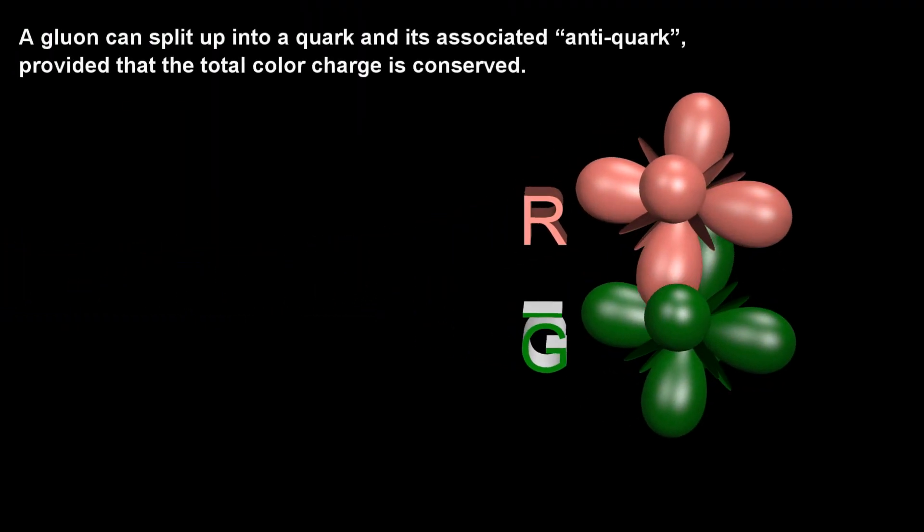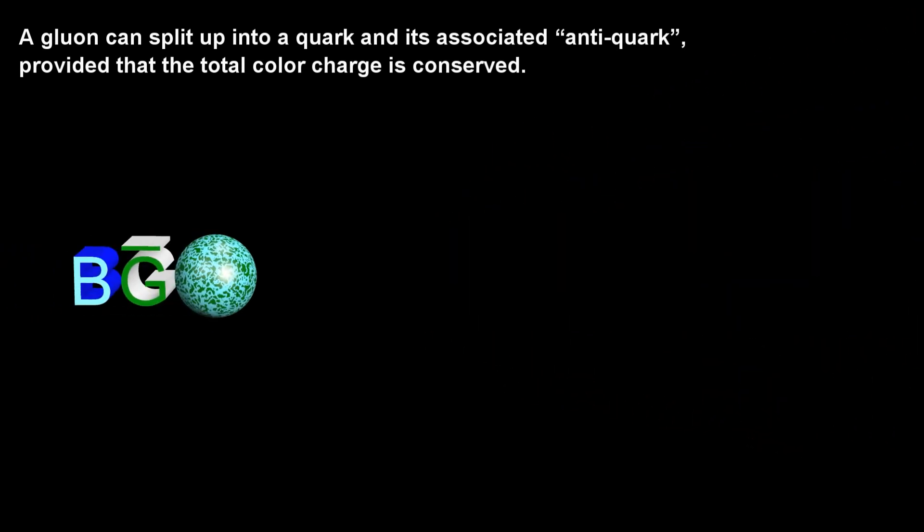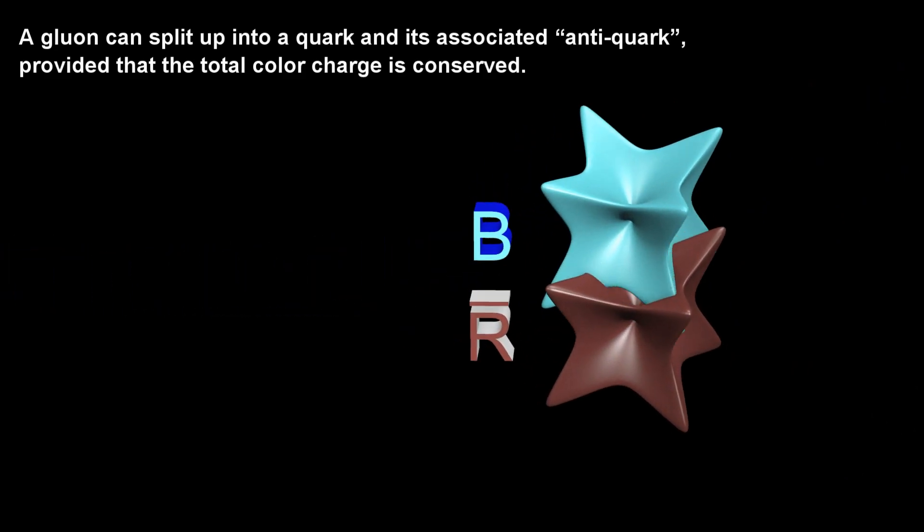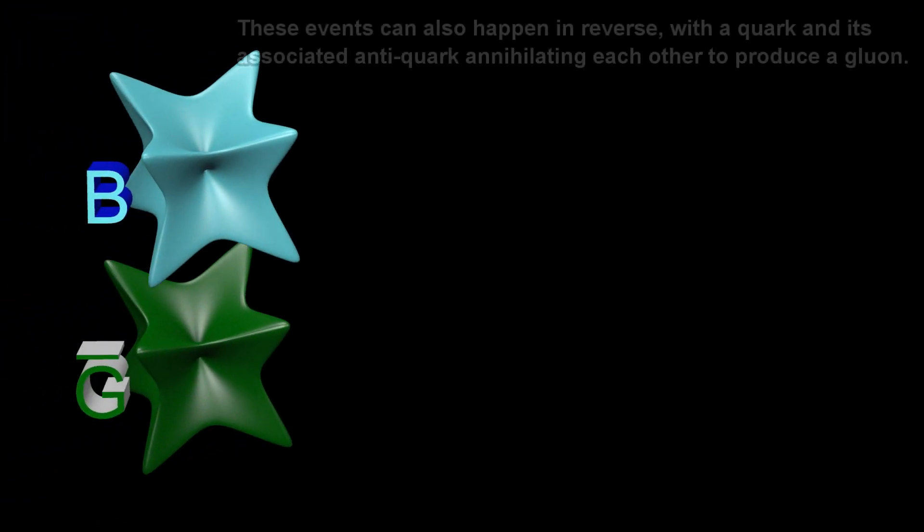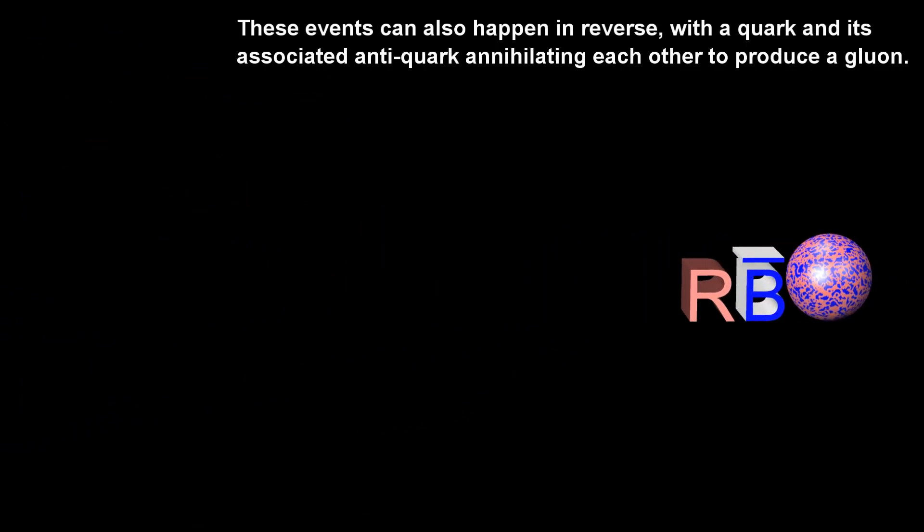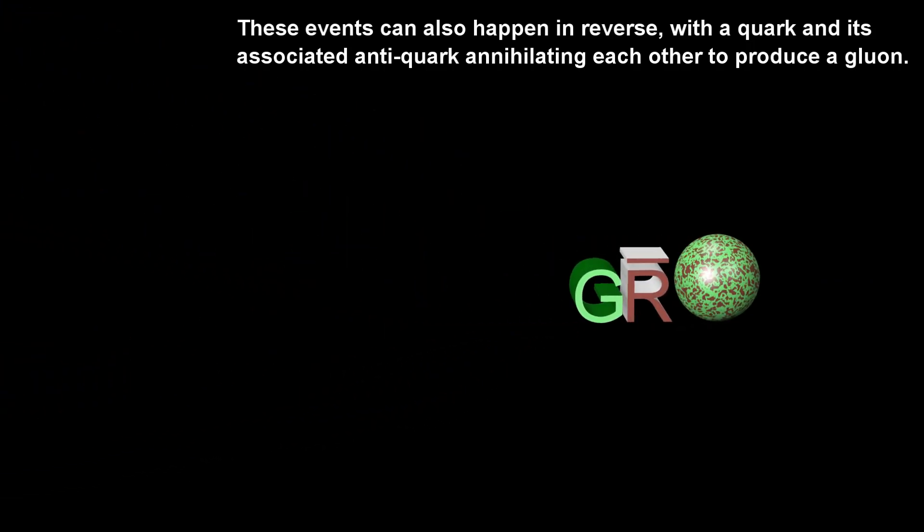A gluon can split up into a quark and its associated anti-quark, provided that the total color charge is conserved. These events can also happen in reverse, with a quark and its associated anti-quark annihilating each other to produce a gluon.